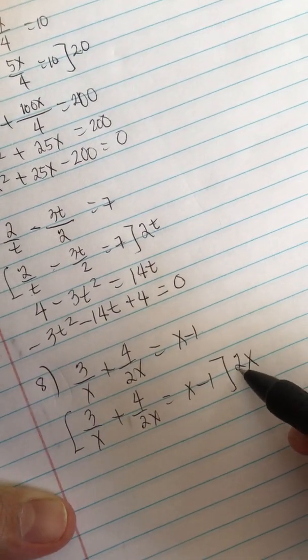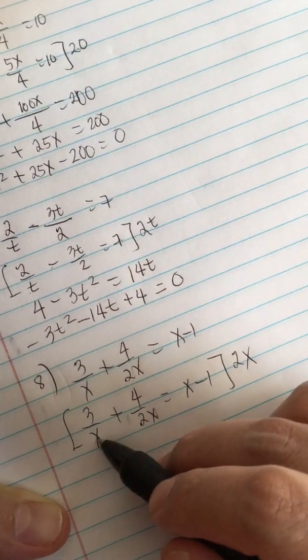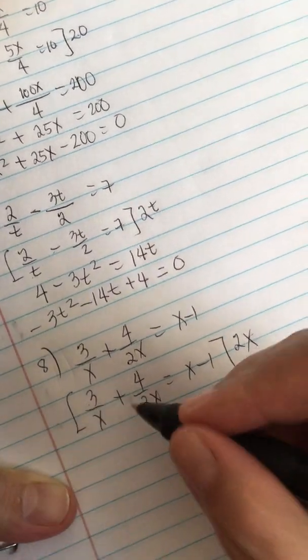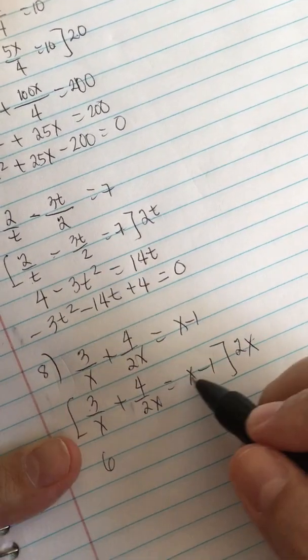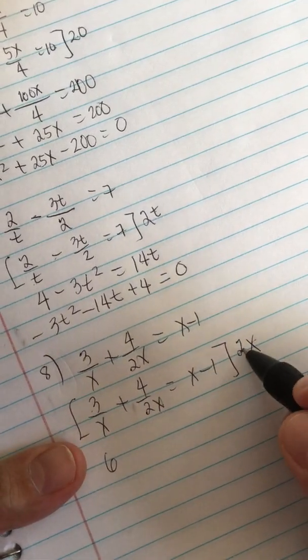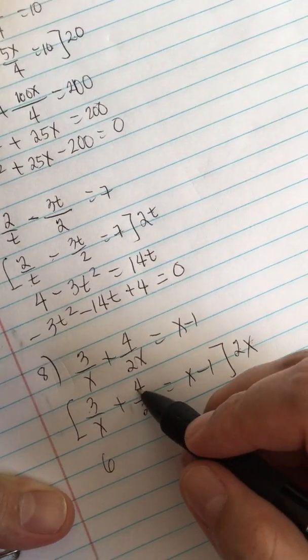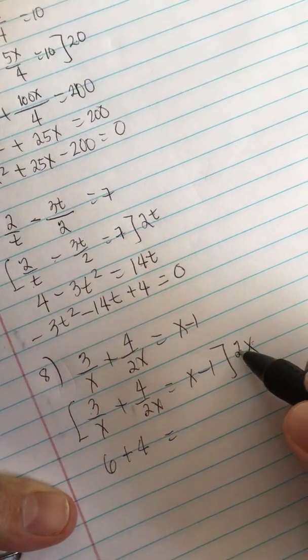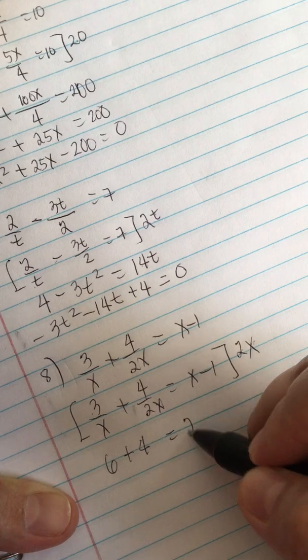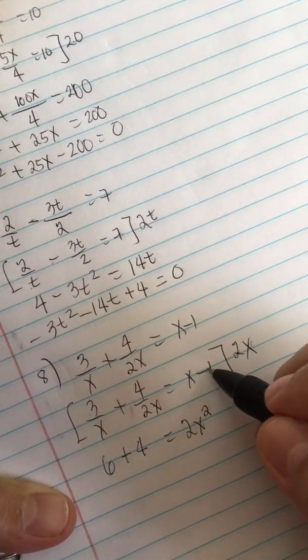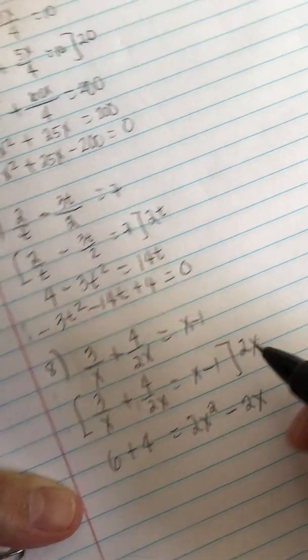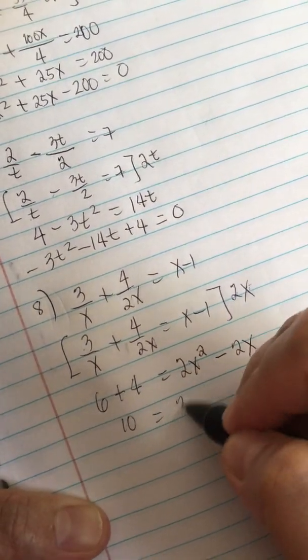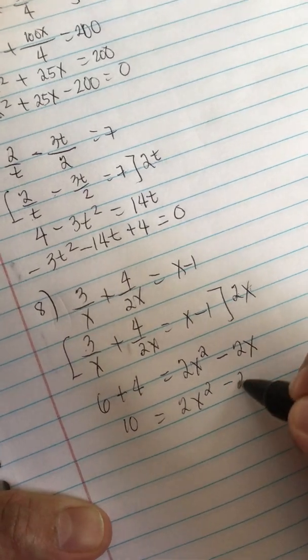We distribute the 2x. The x and the x will cancel, so we only have 2 here. 2 times 3 equals 6. In this fraction, the 2x and the 2x will cancel, so we only have 4 left. Now we combine like terms. This is 10 equals 2x squared minus 2x.